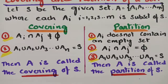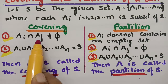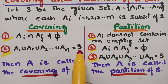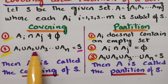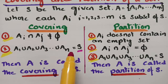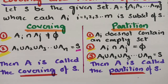So for covering: there can be common elements, and if you make a union we should get the main set. Then we say A1, A2, A3 and so on are the coverings of the main set S. Now let's move to partition and look at an example.